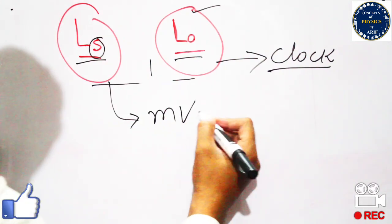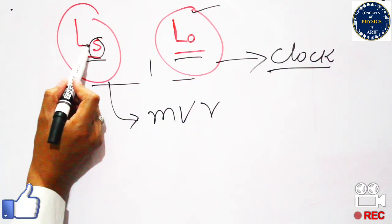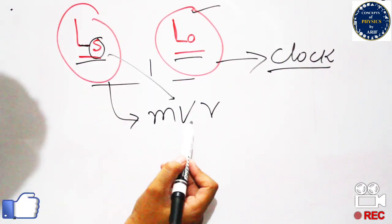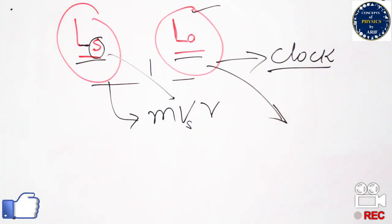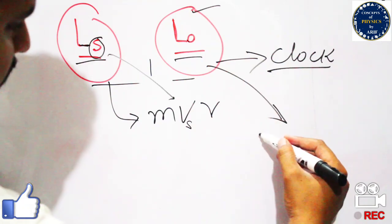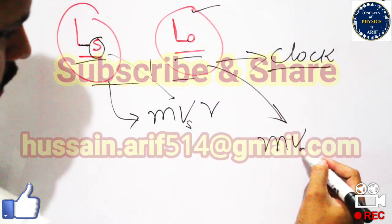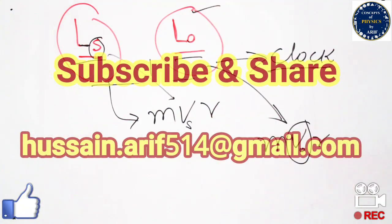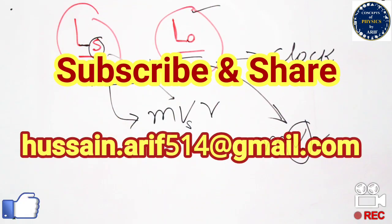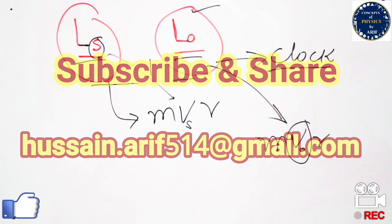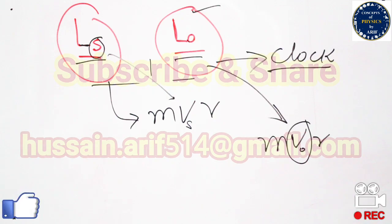The formula for both types is the same. Spin angular momentum is mvr where the body spins about its own axis. Orbital angular momentum L subscript o equals m times v subscript o times r, where the body moves in a circular or orbital path. This concludes our discussion of angular momentum, its types, units, dimensions, and definition. Please subscribe for more videos.